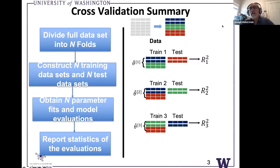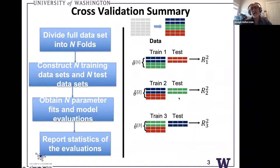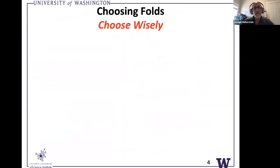Let me pause for a second and see if there are questions on these ideas so far. It makes sense in terms of the motivation here as well: we want to use all of the data for training, which we're able to do because we consider different combinations of the data. And we want to use all the data for testing, because the different folds are used in different steps here.